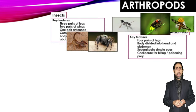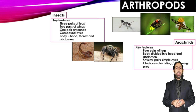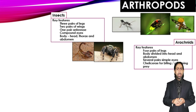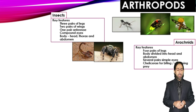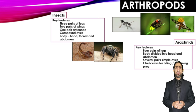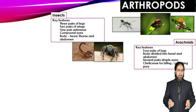For arachnids, the main feature is four pairs of legs, which is why they are referred to as octopoda — 'octa' means eight and 'poda' means legs. Insects are hexapoda, with six legs. Arachnids have eight legs or four pairs of legs. Do not be confused whether you mention pairs or total legs.